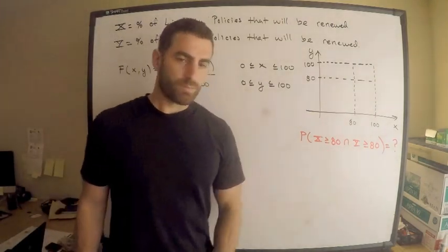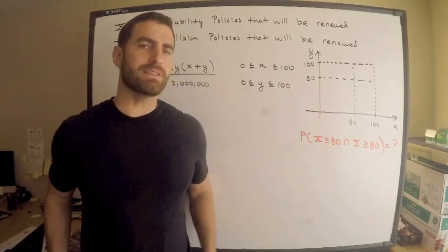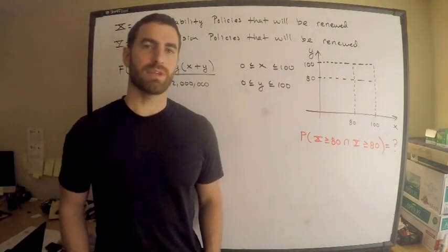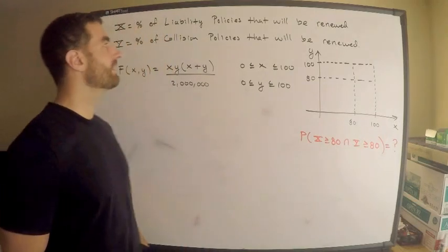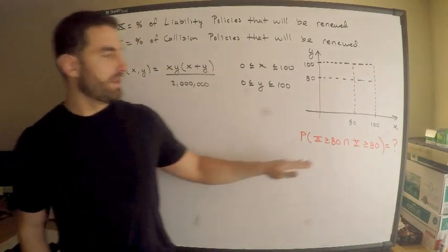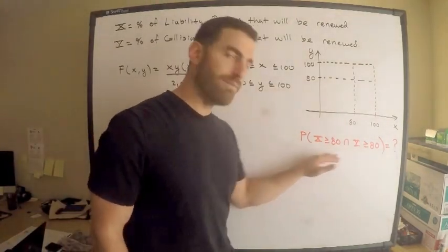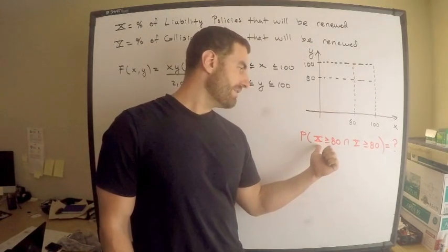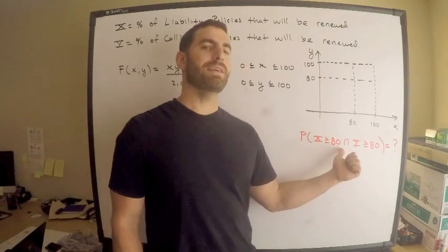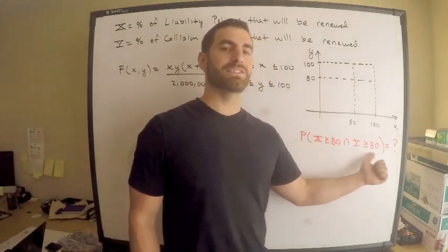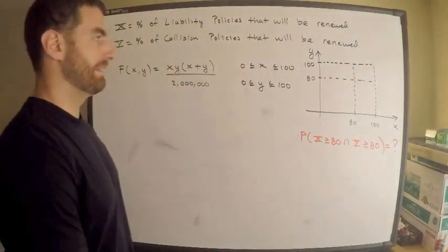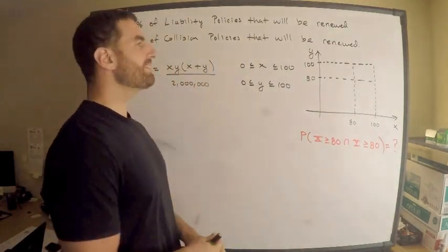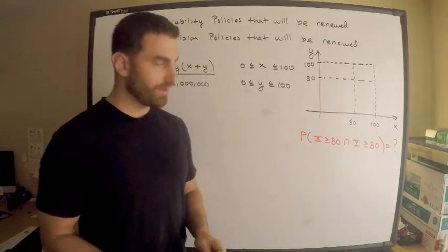We're asked to find the probability that there are at least 80% liability renewals and 80% collision renewals. So in terms of symbols, I have it here. I want the liability renewals to be at least 80 and the collision to be at least 80. Anything to do with joint distributions, you should always draw a picture.